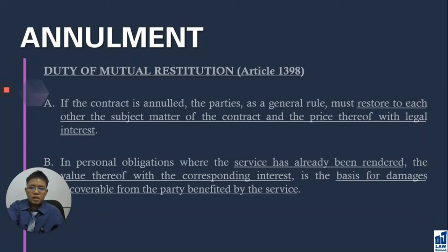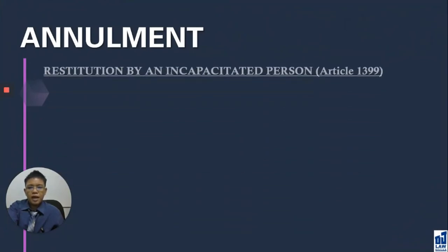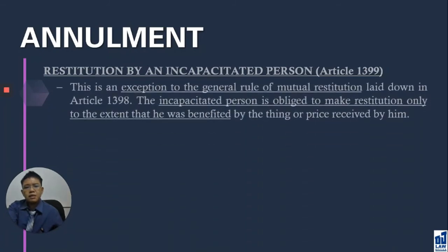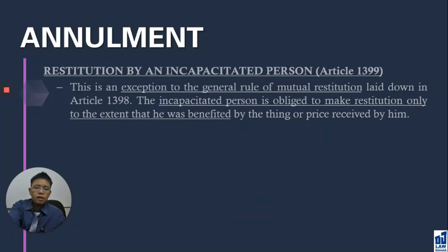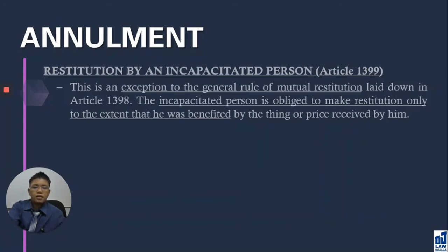This general rule under Article 1398 is subject to an exception under Article 1399, in case of an incapacitated person. The incapacitated person is obliged to make restitution only to the extent that he was benefited by the thing or price received. In our example, the minor received 200,000 pesos. He gambled away 100,000 in various games, and spent the other 100,000 on basic necessities at the supermarket.